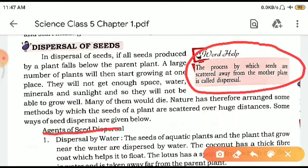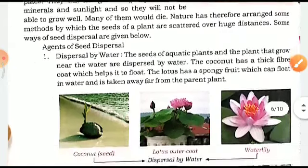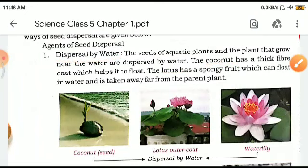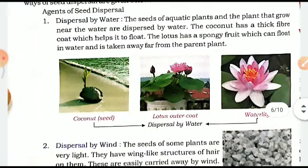There are few agents of seed dispersal. The first agent is water — dispersal by water. Here the seeds are dispersed through water. Examples are coconut and lotus. The coconut has a fibrous outer covering which makes it light and helps it float on water, so wherever the water goes the seeds travel along. Lotus has a spongy fruit which can float in water. Similarly, water lily is another example.